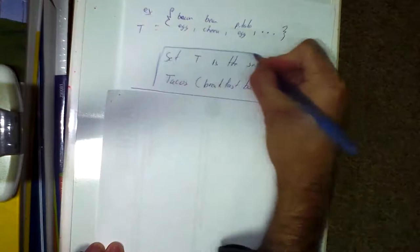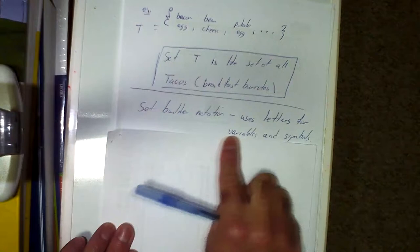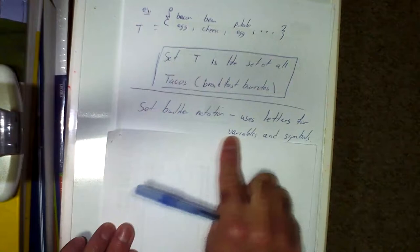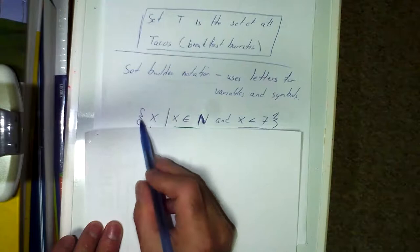The third way to write a set is called set-builder notation. It uses letters for variables and symbols. Here's an example of what set-builder notation looks like — it's a bit funky. We have braces, x, then a vertical line, then x and the element-of symbol for natural numbers, and x is less than 7.